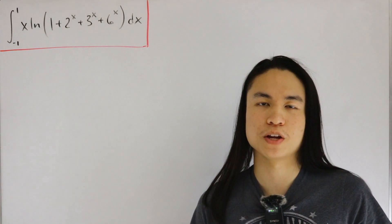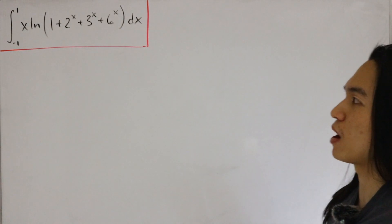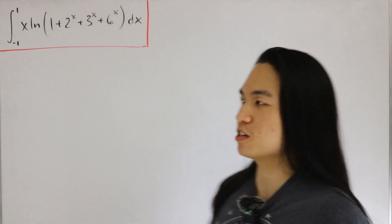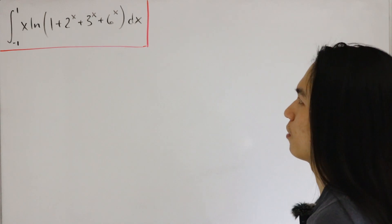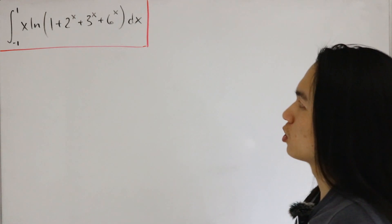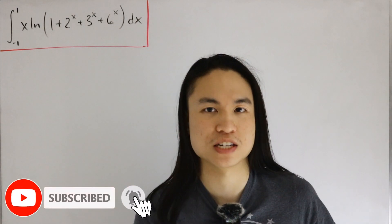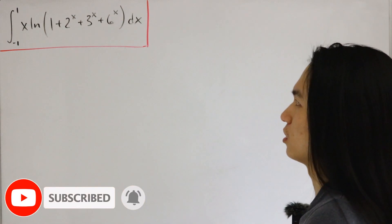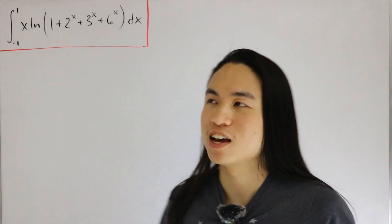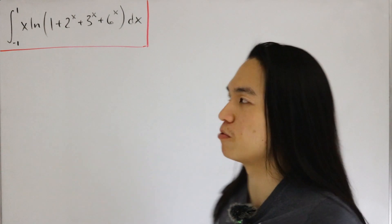We have a definite integral with symmetric bounds from negative one to one. The graph of the integrand itself isn't symmetric, but the bounds are. Our integrand is x times the natural log of (1 + 2^x + 3^x + 6^x) dx. At first glance it looks complicated, but this is actually a very interesting integral with creative techniques.